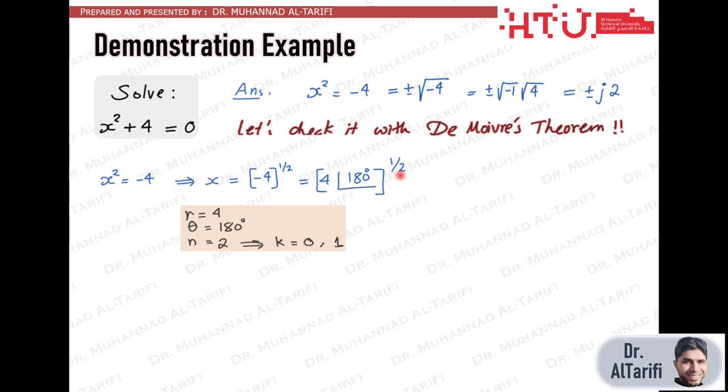And we would expect 2 roots when substituting k equals 0 and 1. With k equals 0 we get the first root as r to the power half which is 4 to the power half or 2 and the phase is theta divided by n which is 180 degrees divided by 2 or 90 degrees. So this root becomes 2 at the phase of 90 degrees which equals to j2.